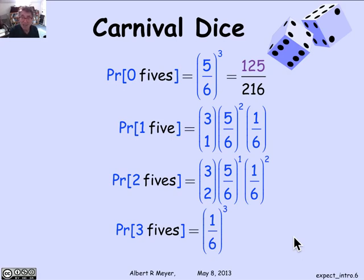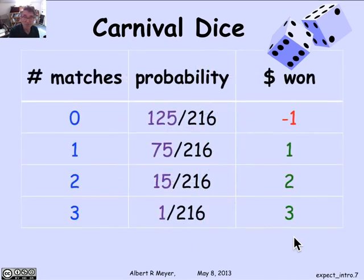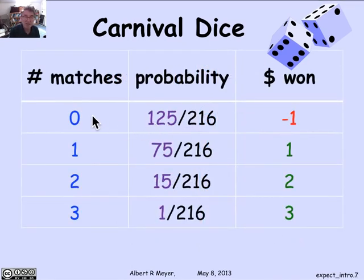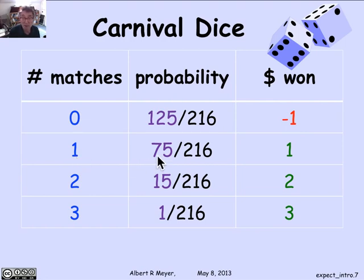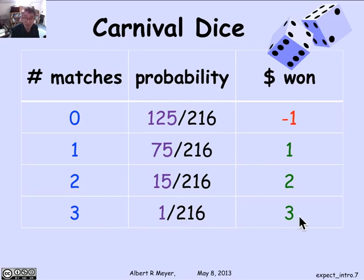So we can easily calculate these probabilities. Let's put them in a chart. Zero matches has a probability of 125/216, and in that case I lose $1. One match has a probability of 75/216, and I win $1. Two matches is 15/216, I win $2. And three matches, there's one chance in 216 that I win $3.